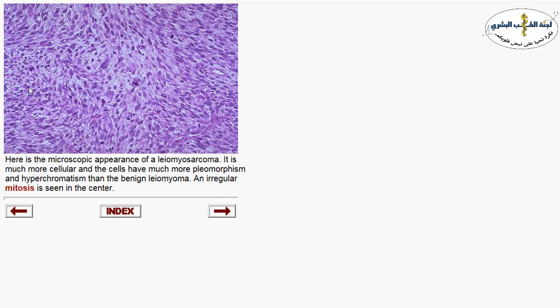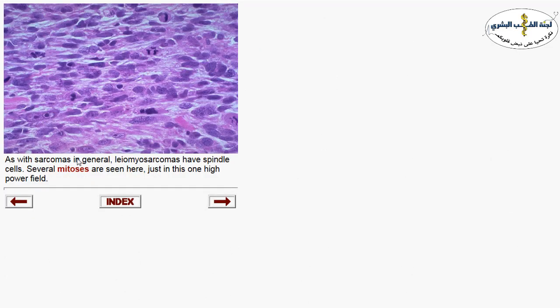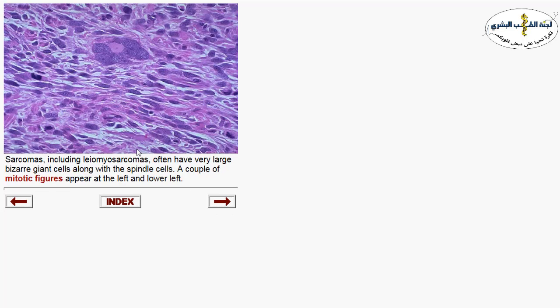Here you see a cellular neoplasm containing many mitotic figures with atypia — this is atypical mitosis. This represents leiomyosarcoma. You can appreciate the atypia with hyperchromatic nuclei. This is atypical mitosis, frequent mitosis, and atypia within the neoplastic cells — all representing a leiomyosarcoma.